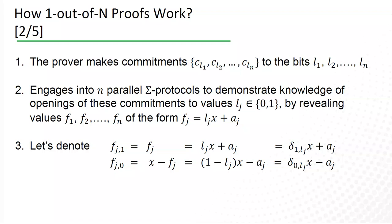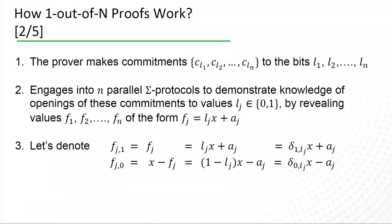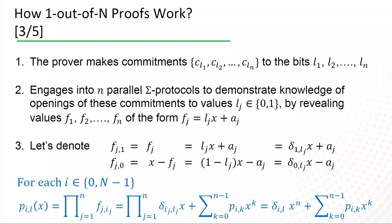And during these proofs, n elements are revealed of the following form, F1, F2, Fm, where each Fg is equal to LG times X plus AG. So, let's make the following denotations. Let's denote Fg1 to be equal to Fg. And we can see that it's equivalent to be equal to delta one LG times X plus AG, because it's simple. If the bit LG is one, then delta one LG is also one and zero otherwise. The same way, let's denote Fg0 as X minus Fg, which will be equal to delta zero LG X minus AG.